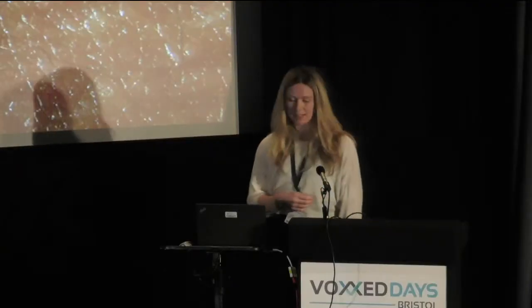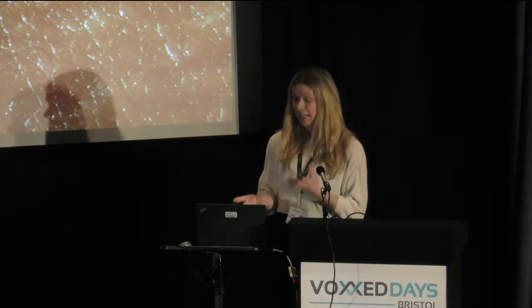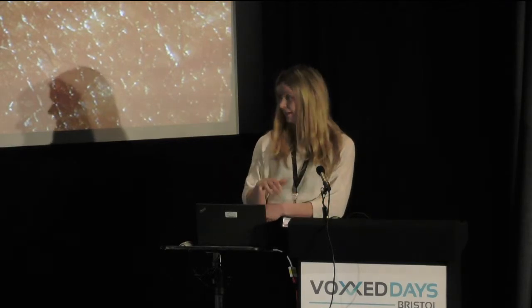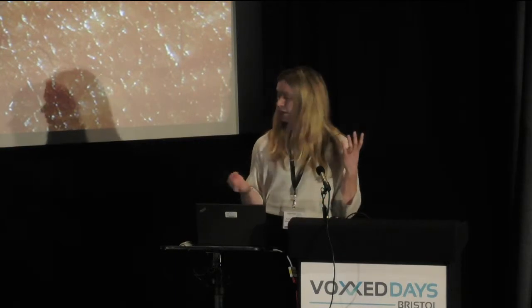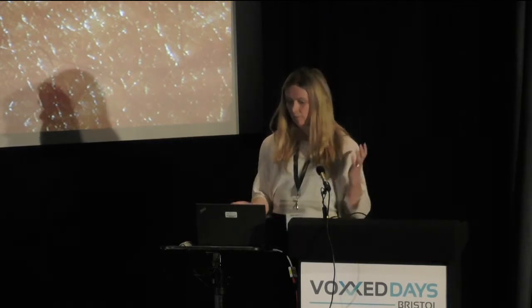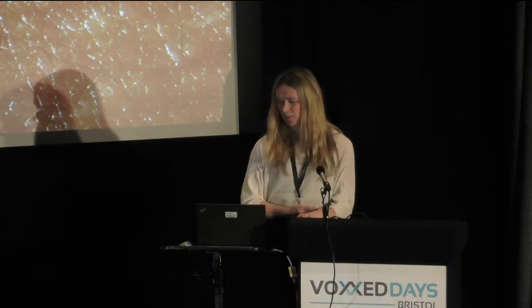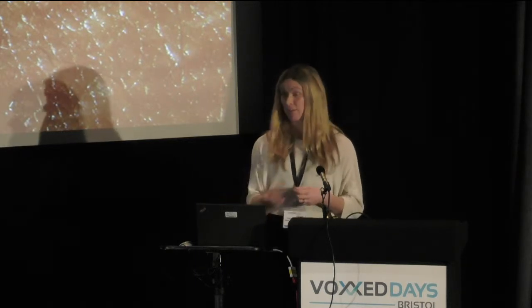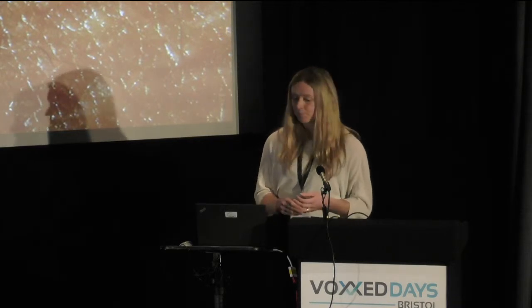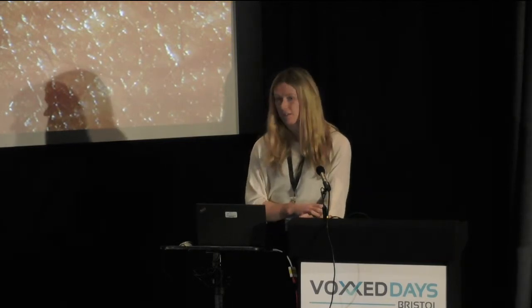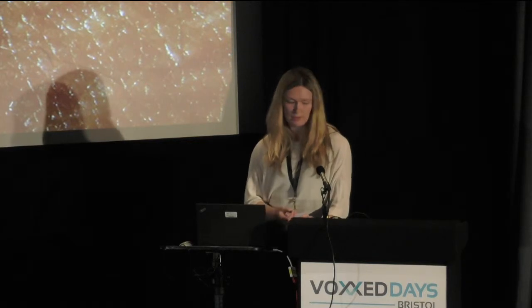The second concept is vestigial functionality - this picture is of goosebumps. Goosebumps allegedly have two functions in mammals: raising hair follicles to trap air for insulation, and making the mammal look larger to scare predators. They don't really achieve either function in humans anymore - we don't have a shaggy enough coat - but we still have them because they're not slowing us down, so there's no reason for them to evolve away. I believe we have vestigial functionality in our architectures today: things we do because we've always done them, without stopping to think if they're still relevant.